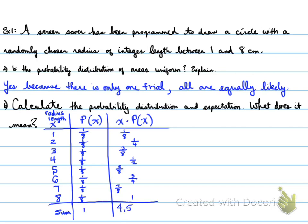Now, the sum of all the probabilities has to equal 1, otherwise there's something wrong. And x times p(x) is equal to 4.5. What does that mean? Well, on average, the expected radius length will be 4.5 centimeters. So if I took all the different values and I added them up and took the average, on average, the expected radius length will be 4.5 centimeters.